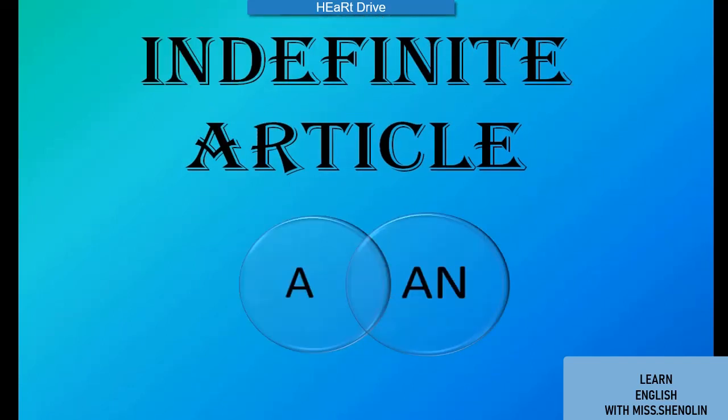Indefinite article. The meaning of the word 'indefinite' is 'not being specified.' The indefinite articles are 'a' and 'an.' We use 'a' and 'an' when we are not being specific about a place, a person, or a thing.